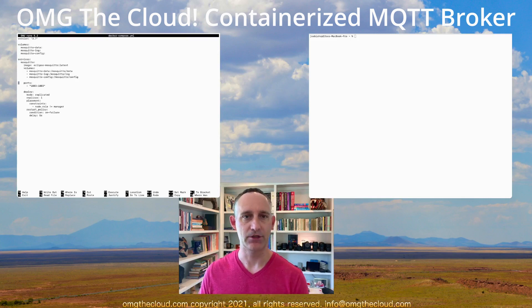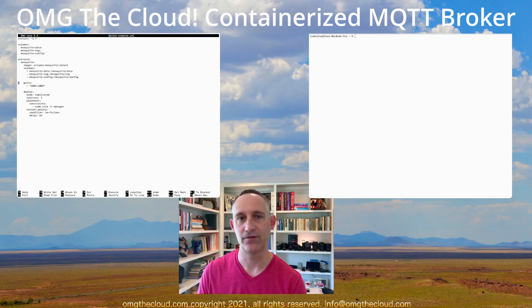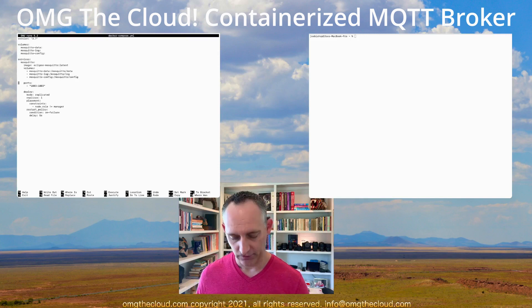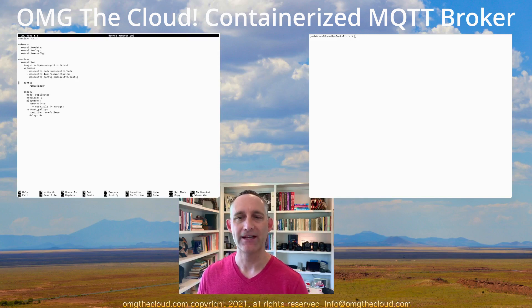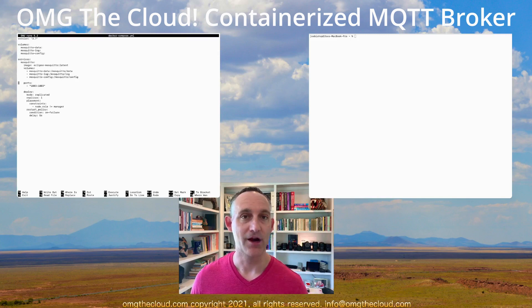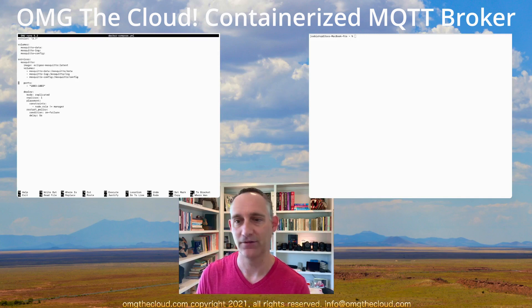Port 1883 is the standard MQTT port. There are a few other ports we'll get into in more advanced configurations around secure connections and web sockets, but for starting out here we're just going to use the base 1883. We're going to deploy this out, and this is also an opportunity where we're going to get into Docker volumes just a little bit. Sooner or later you're going to have to get under the hood into the actual file system where your Docker volumes live.